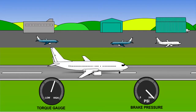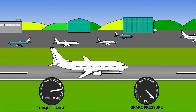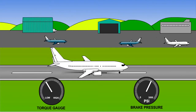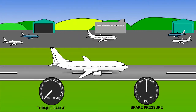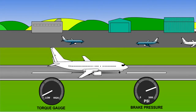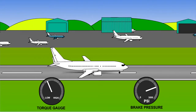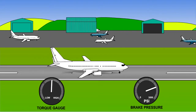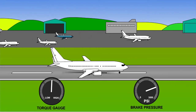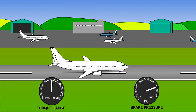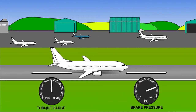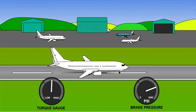A brake torque sensor is provided at each wheel to detect excessive torque during braking, to prevent damage to the landing gear strut or strut mountings. This is more of a problem with carbon brakes. When excessive torque stress is detected, a signal is sent to the anti-skid valve, and brake pressure to that wheel is reduced.